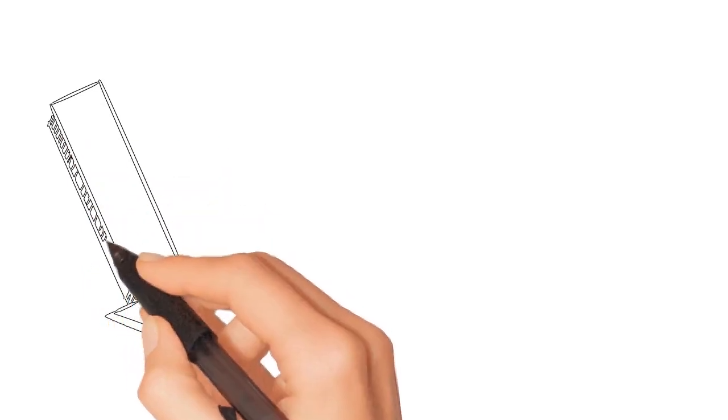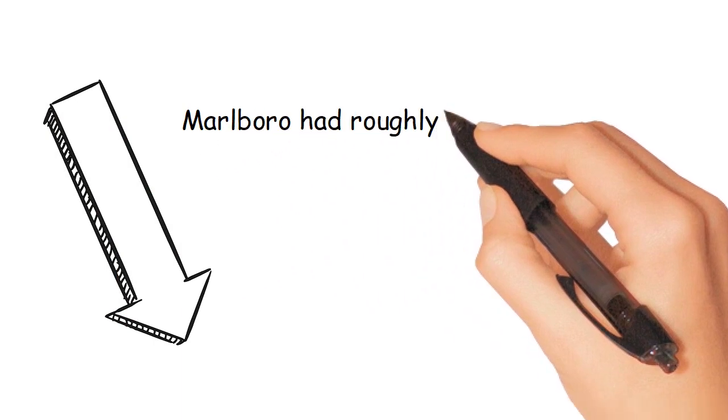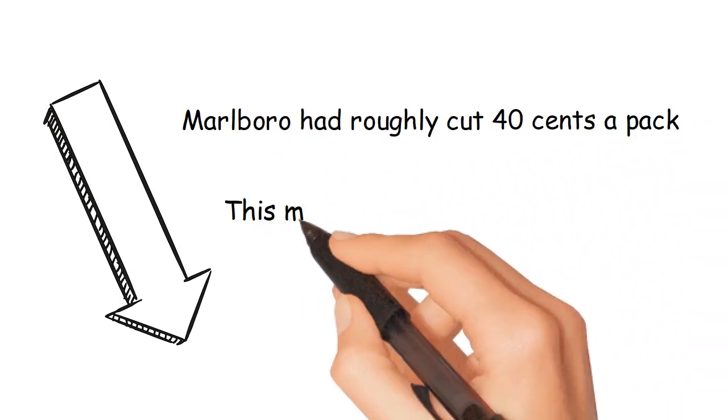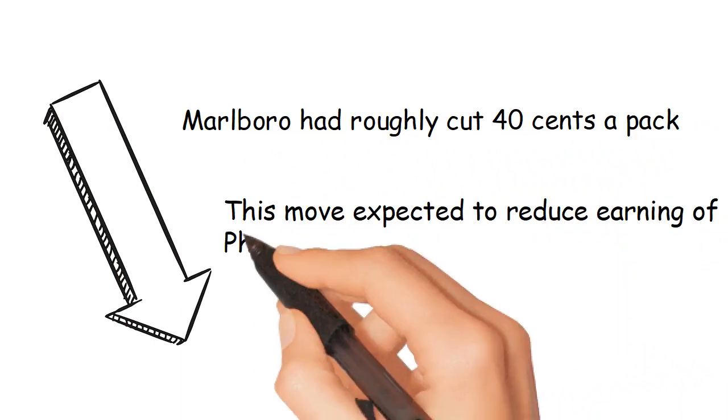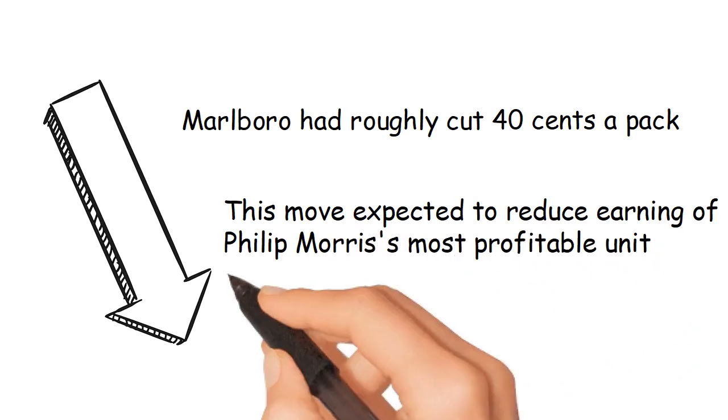Out of the four major steps, most eye-catching was a major promotional cut in price of Marlboro. Marlboro had roughly cut 40 cents a pack. This move was expected to reduce earnings of Philip Morris's most profitable unit by 40%.